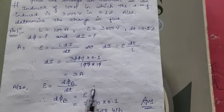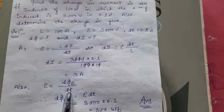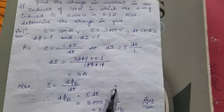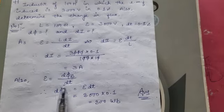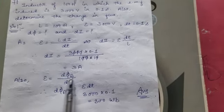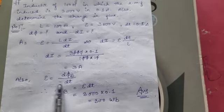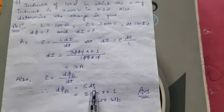After that, we need to find out the change in flux, which we denote as d phi B. Epsilon equals change in flux divided by time. I will cross multiply this formula.